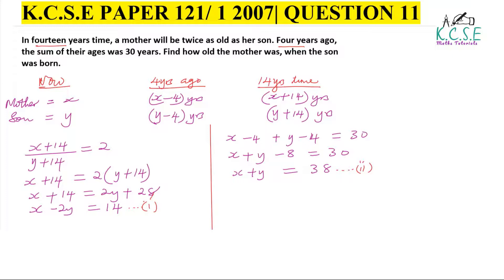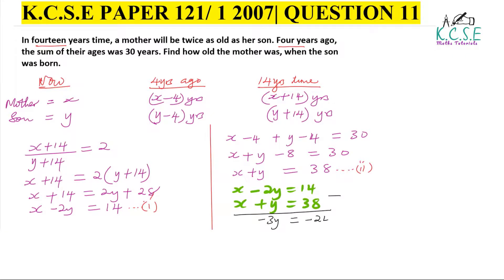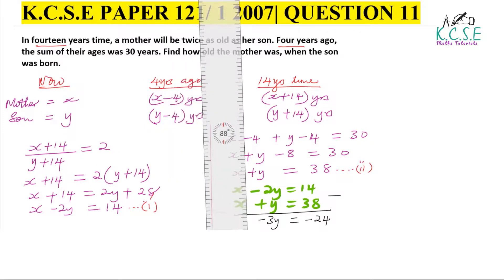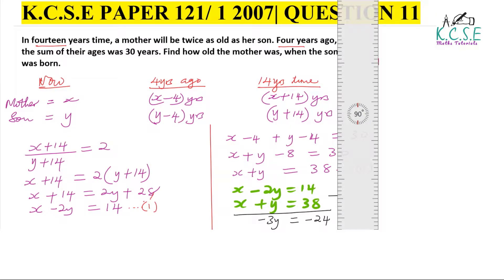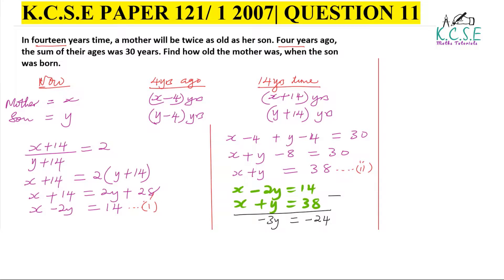We solve these two equations simultaneously. Equation one: x minus 2y equals 14. Equation two: x plus y equals 38. We eliminate x by subtracting equation one from equation two. We get negative 2y minus y, giving negative 3y equals negative 24. Therefore y equals 8.